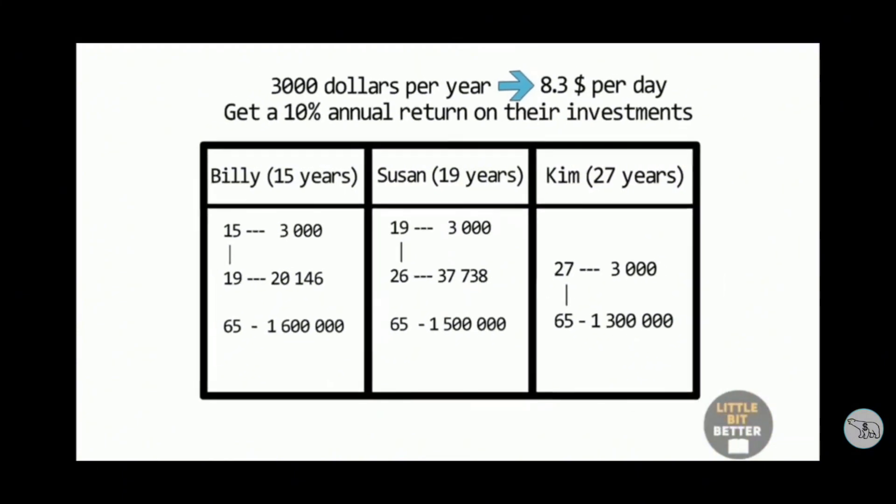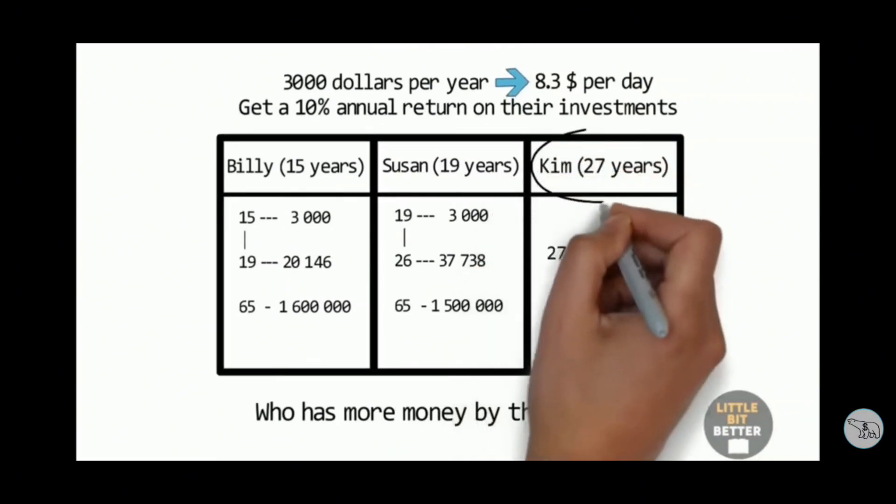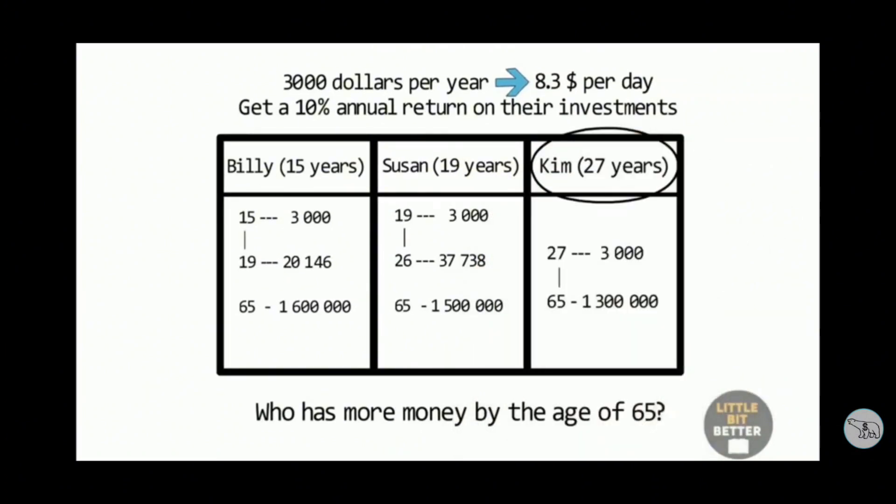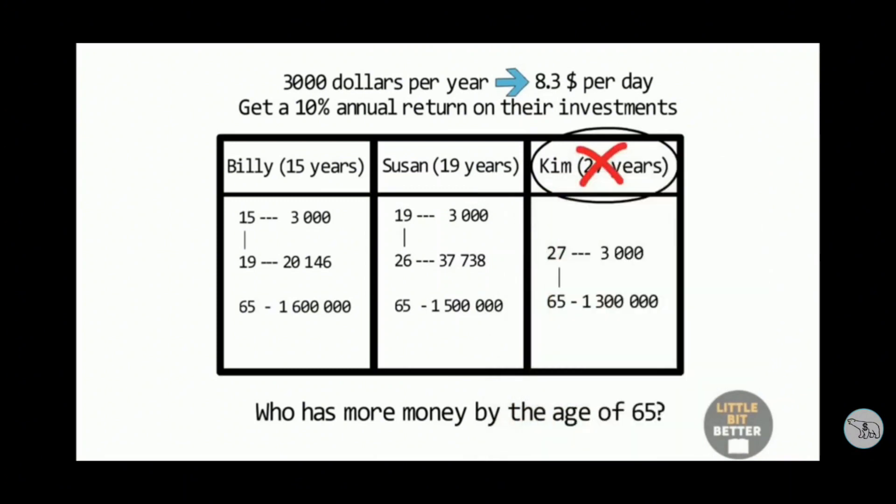Here comes the big question. Who has more money by the age of 65? Well, if you think Kim has the most amount of money because she invested the longest period and the biggest amount, then you're wrong. She actually has the least among the three.